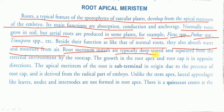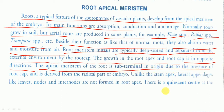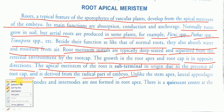The root meristem initials are typically deep-seated and separated from the external environment by the root cap. The growth of the root apex and root cap is in opposite directions — both of them grow on opposite sides. The apical meristem of the root is sub-terminal in its origin due to the presence of the root cap, and is derived from the radical part of the embryo.